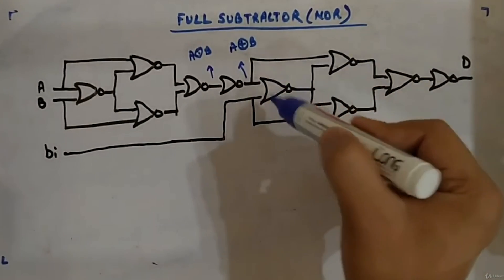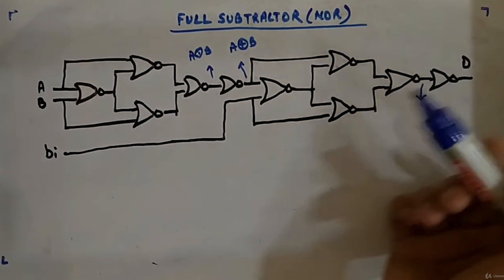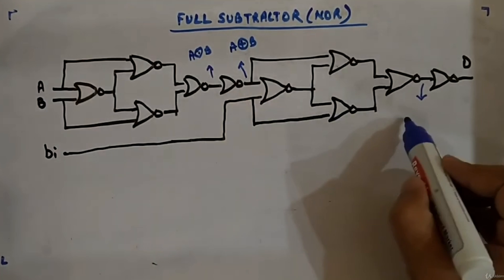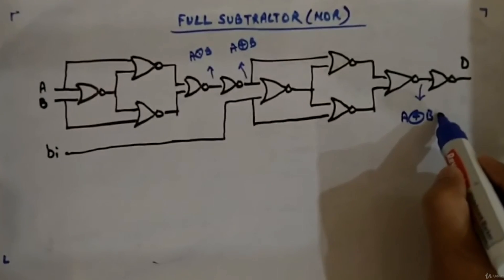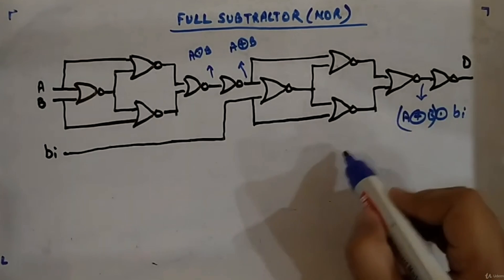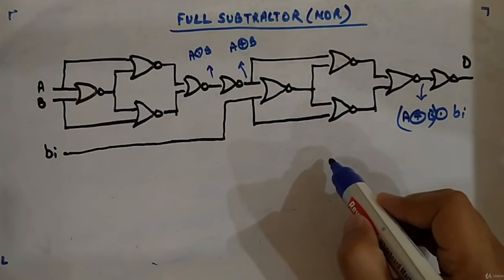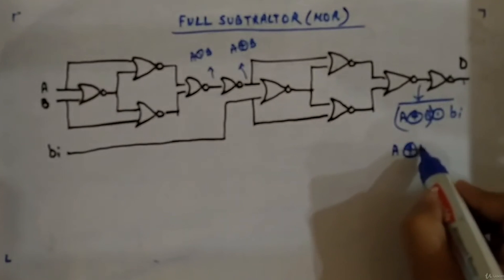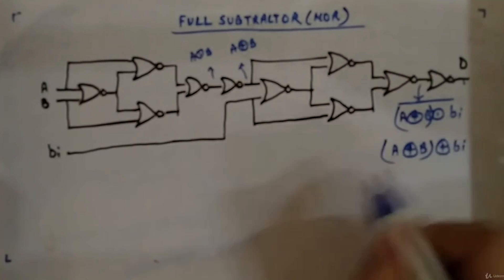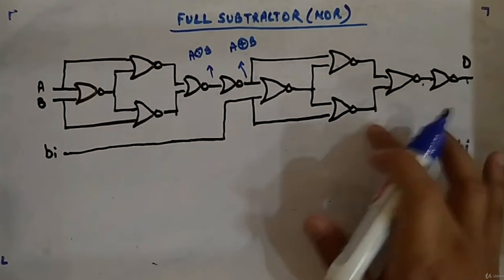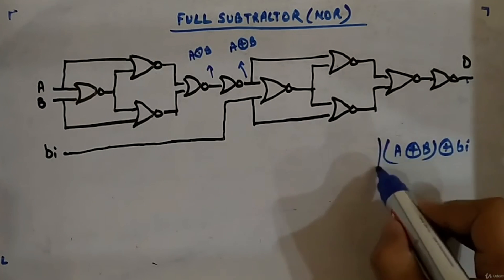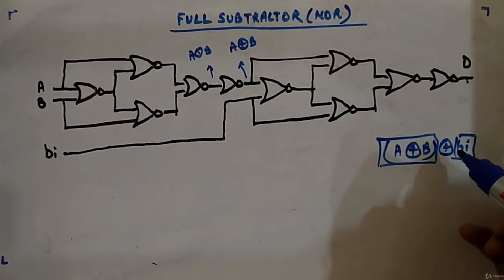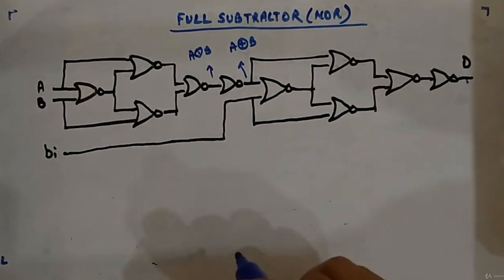A similar arrangement is here as well. The output here is XNOR of these two inputs - A XOR B XNOR Bi. If I take the bar of this, the output will be A XOR B XOR Bi. Think of this as one variable and this as another variable - taking the bar converts XNOR into XOR. That is how you get the difference term.